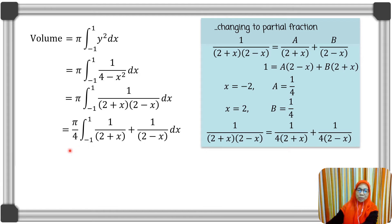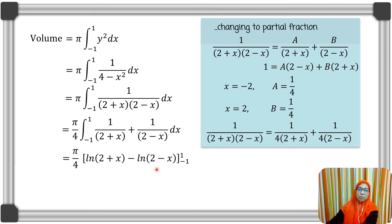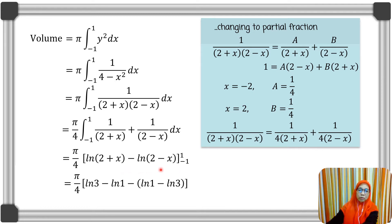Taking out the common factor 1/4 outside the integral, we integrate 1/(2 + x) plus 1/(2 - x). The integral of 1/(2 - x) is -ln(2 - x). Substituting the upper limit x = 1, we have ln 3 minus ln 1. Substituting the lower limit x = -1, we have ln 1 minus ln 3. Since ln 1 = 0, we have (π/4) times 2 ln 3, which simplifies to a volume of (5π/2) ln 3 units cubed.